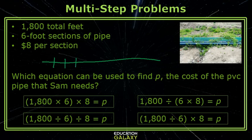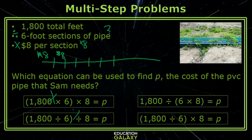up into 6-foot sections — in other words, I'm piecing together 6-foot sections. Each of these sections costs $8. So if I know how many sections there are, I could multiply by 8 and that would give me my cost. How do I figure out how many sections there are? Cutting into equal-sized pieces is a division action, so I need to divide 1,800 by 6. That gives me my number of sections, and then I multiply by 8. Some answer choices don't have divide by 6, and some don't have multiply by 8.